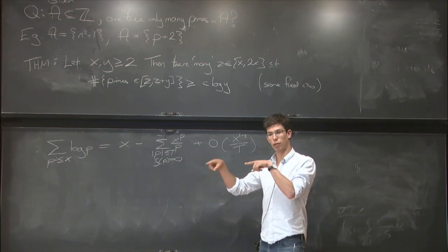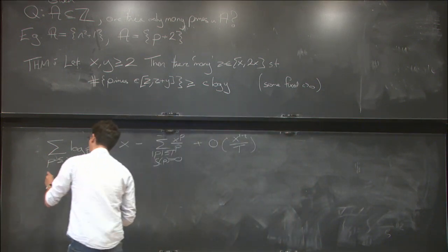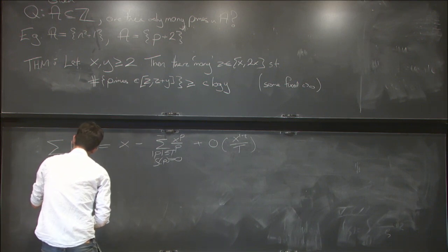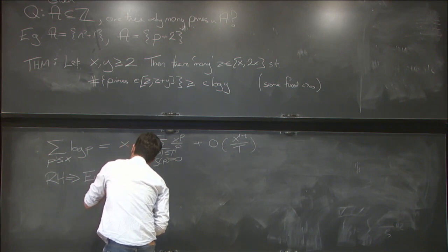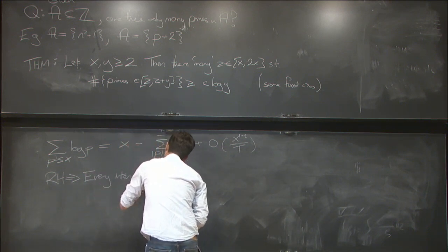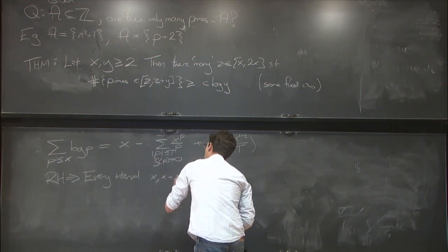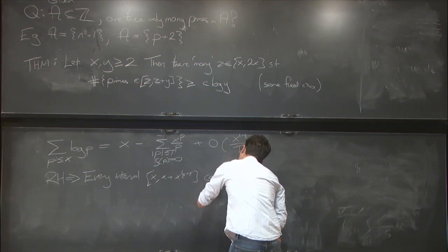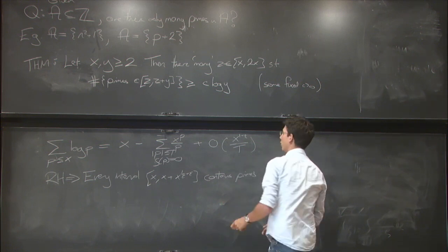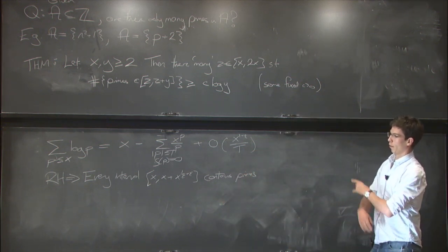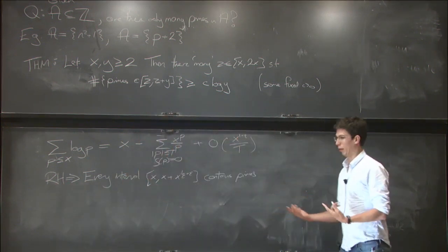And in particular, we'd be able to find a prime in every interval which is slightly bigger than x to the half in length. This would automatically show that there is an asymptotic for the number of primes in that interval. So RH would imply that every interval x to x plus a little bit bigger than x to the half contains primes. And so this is maybe one of the classic reasons why the Riemann hypothesis is viewed as important in terms of its knowledge about primes.